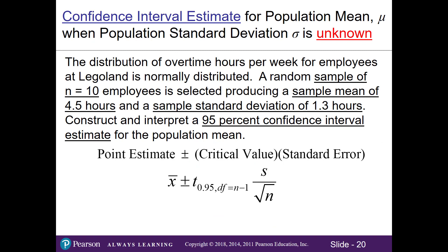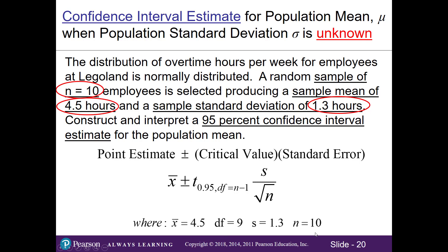Let's look at an example. The distribution of overtime hours per week for employees at Legoland is normally distributed. A random sample of n equals 10 employees is selected, producing a sample mean of 4.5 hours and a sample standard deviation of 1.3 hours. Construct and interpret a 95% confidence interval estimate for the population mean. Our point estimate is our sample mean, given to us at 4.5 hours. Our degrees of freedom are n minus 1, so 10 minus 1 gives us 9. Our sample standard deviation s is 1.3 hours and n is 10.